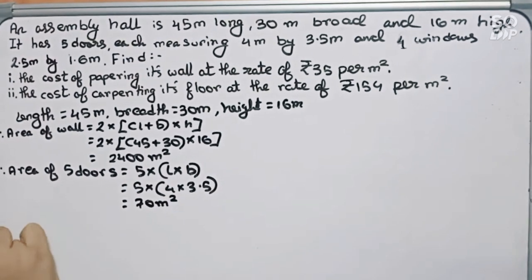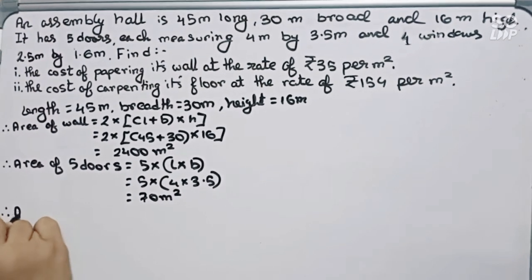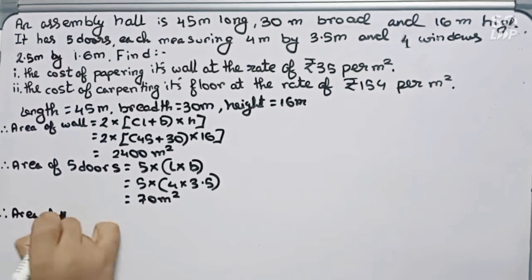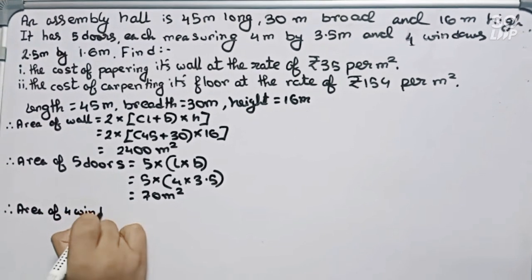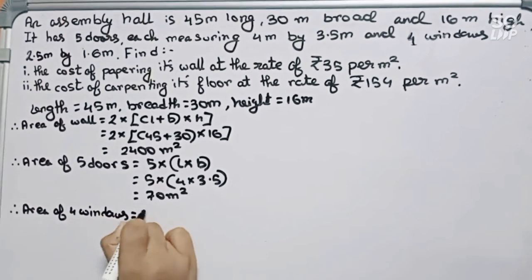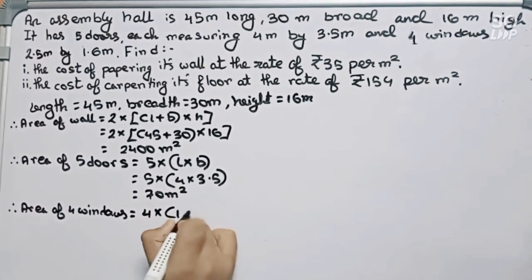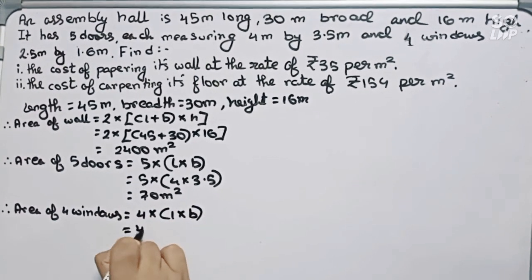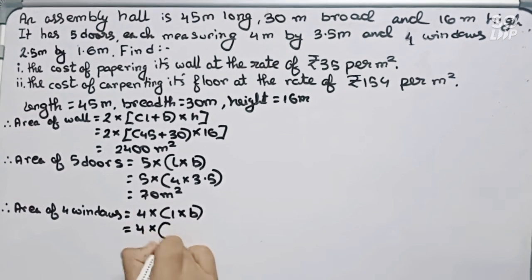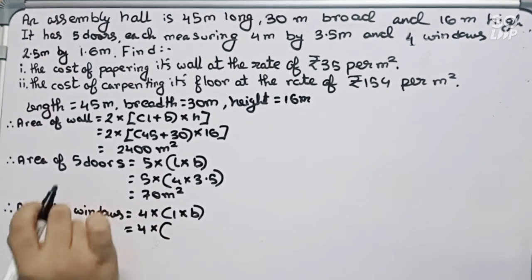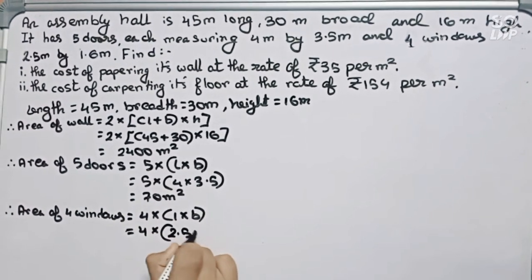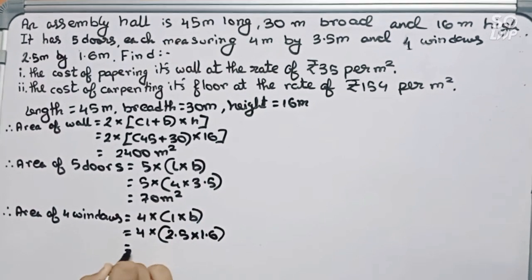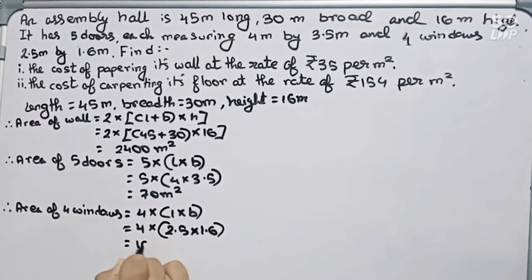Now I have to find the area of 4 windows. Area of 4 windows equals 4 into length into breadth, which is 4 into 2.5 meter into 1.6 meter. After multiplying, it becomes 16 meter square.